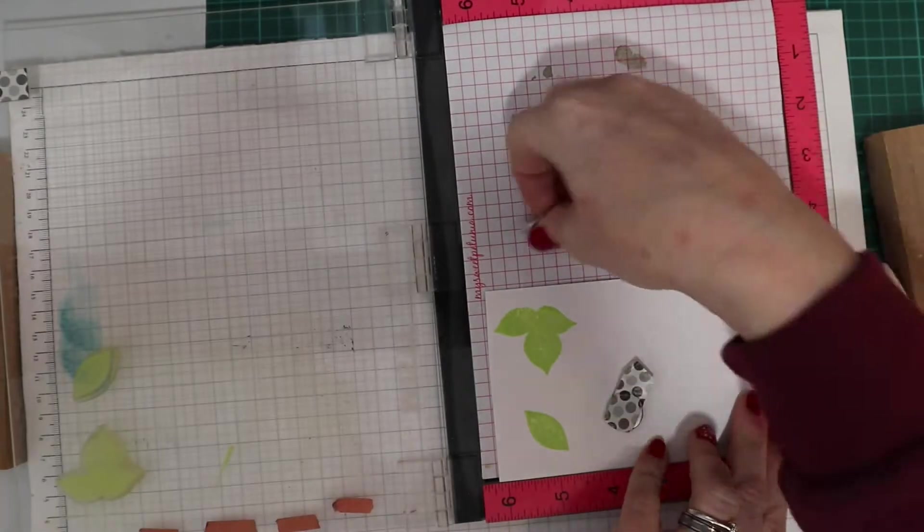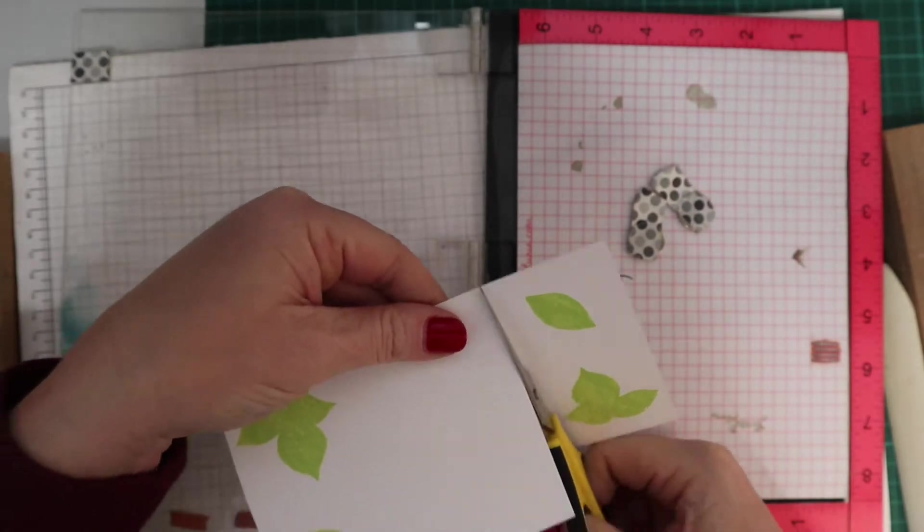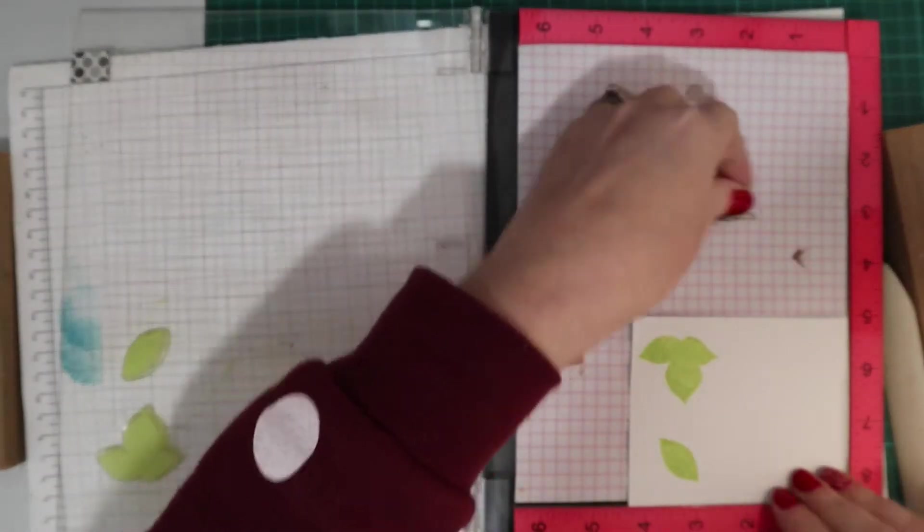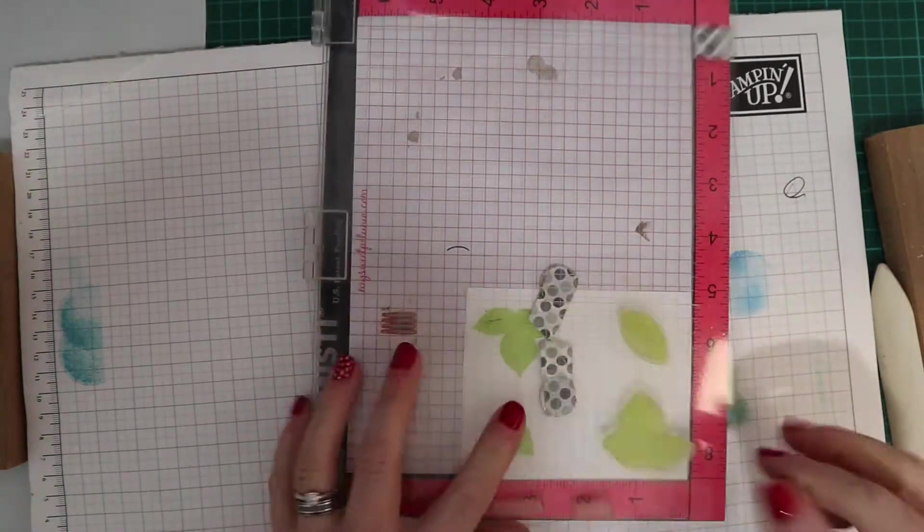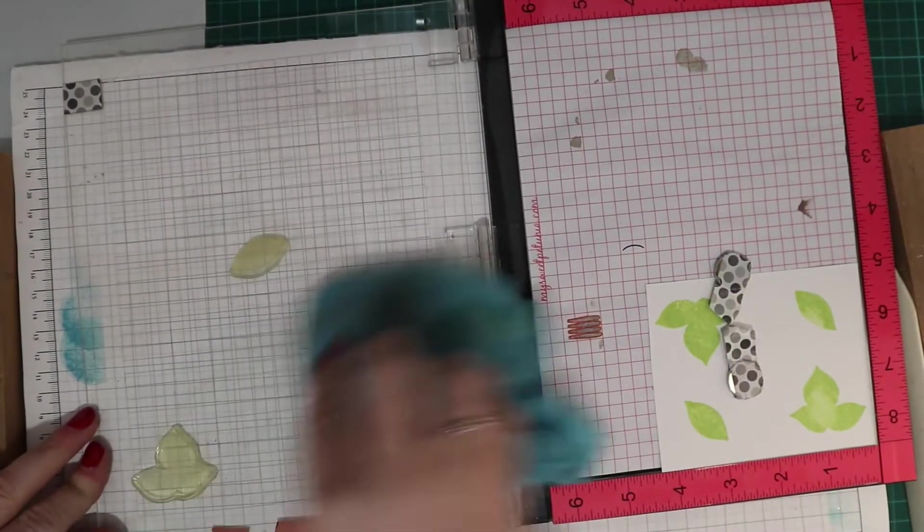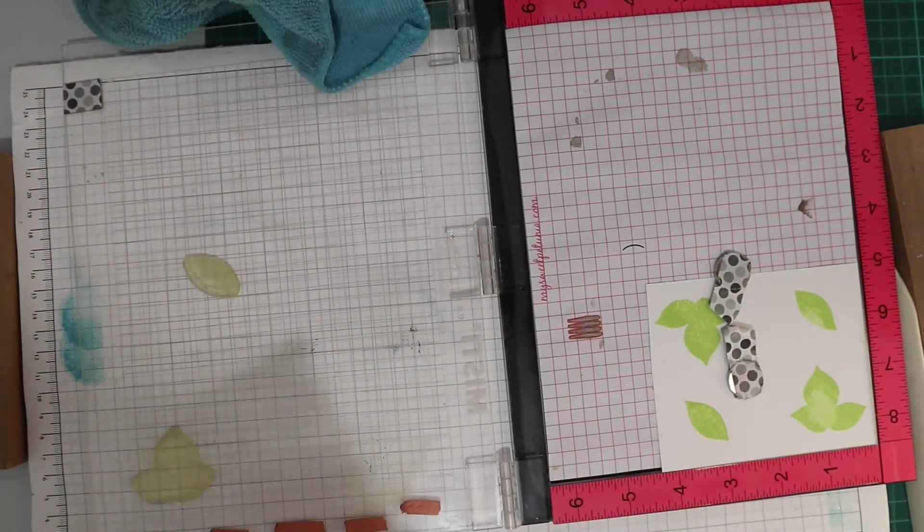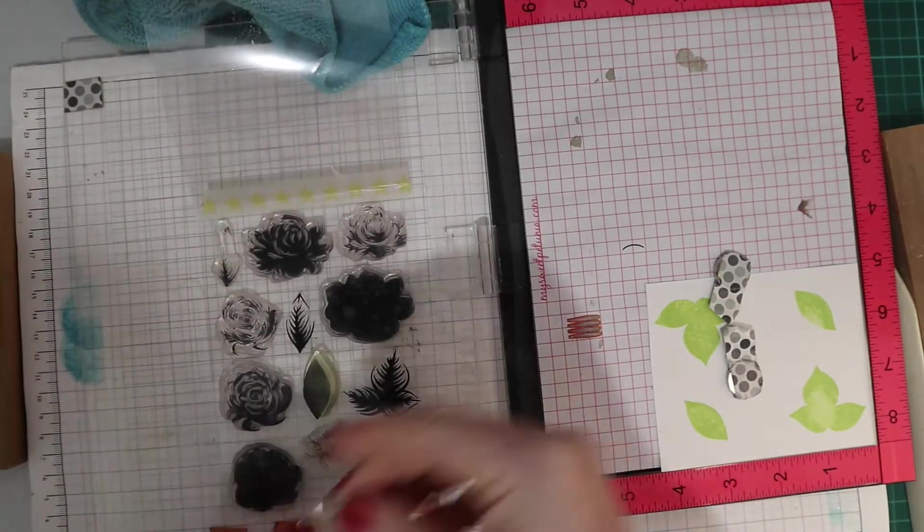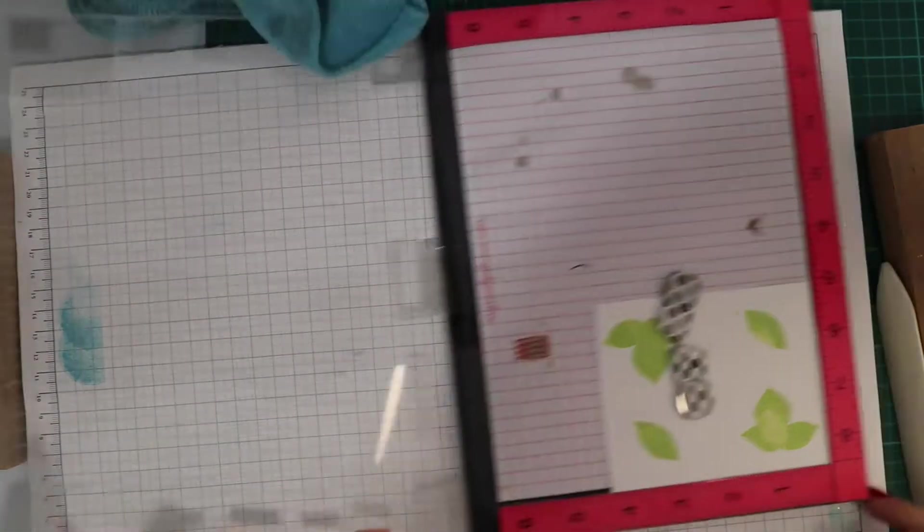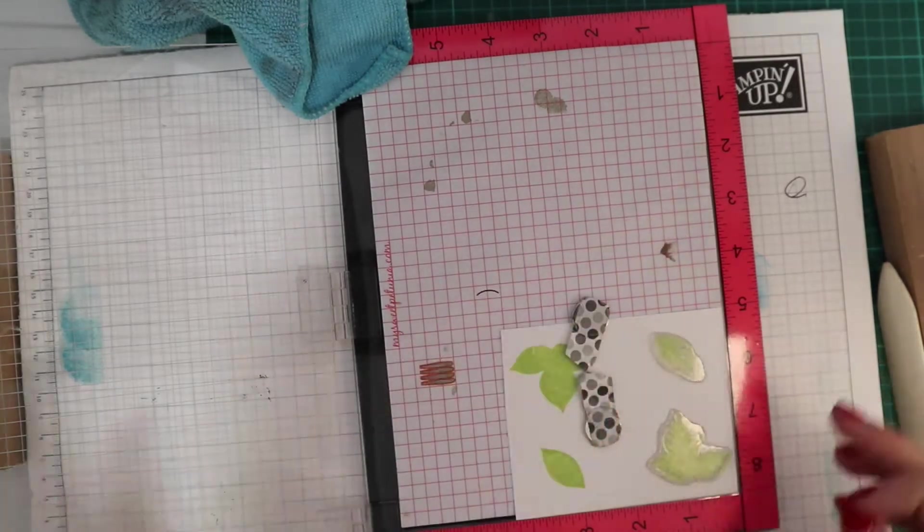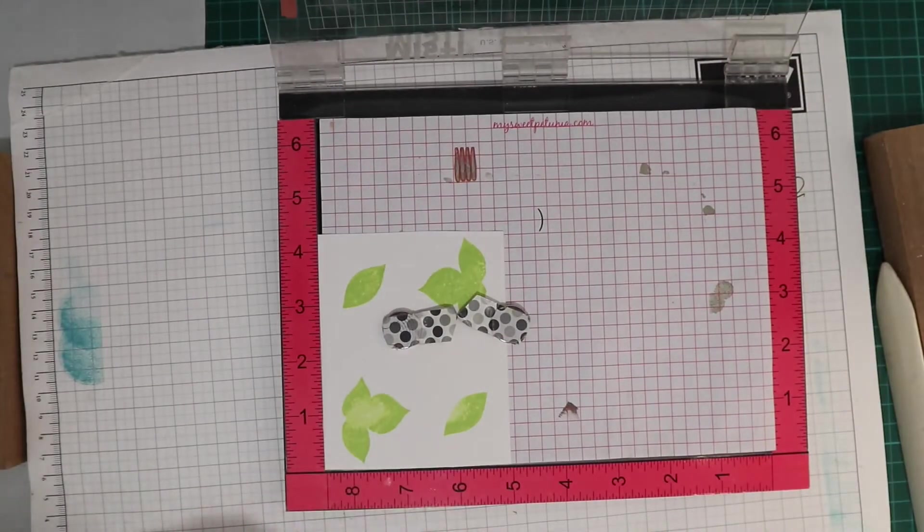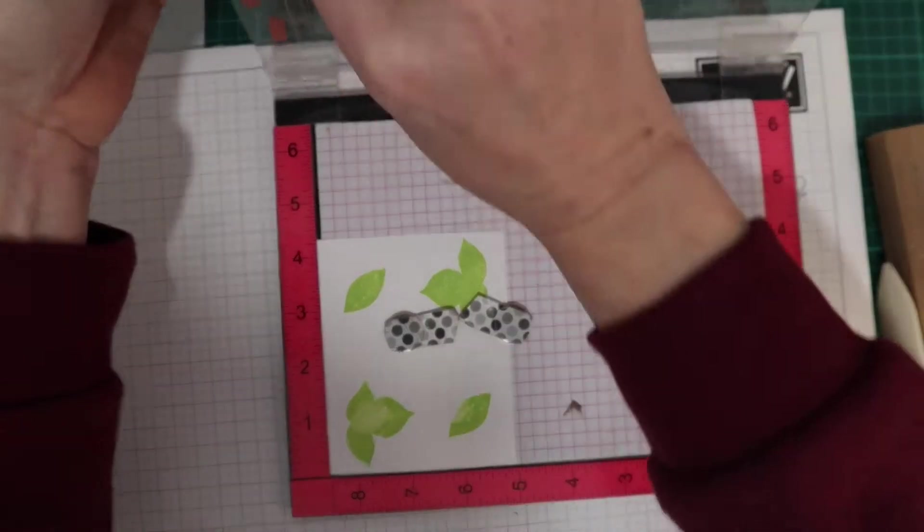Now moving on to the leaves, and again this is the same concept. You have three stamps and three different ink colors. I'm doing these ones in twisted citron, bundled sage, and peeled paint. I'm probably going to end up doing more than I need, but I would rather have extra than not enough when it comes to assembling my card. The base layer didn't stamp perfectly well but that's fine.